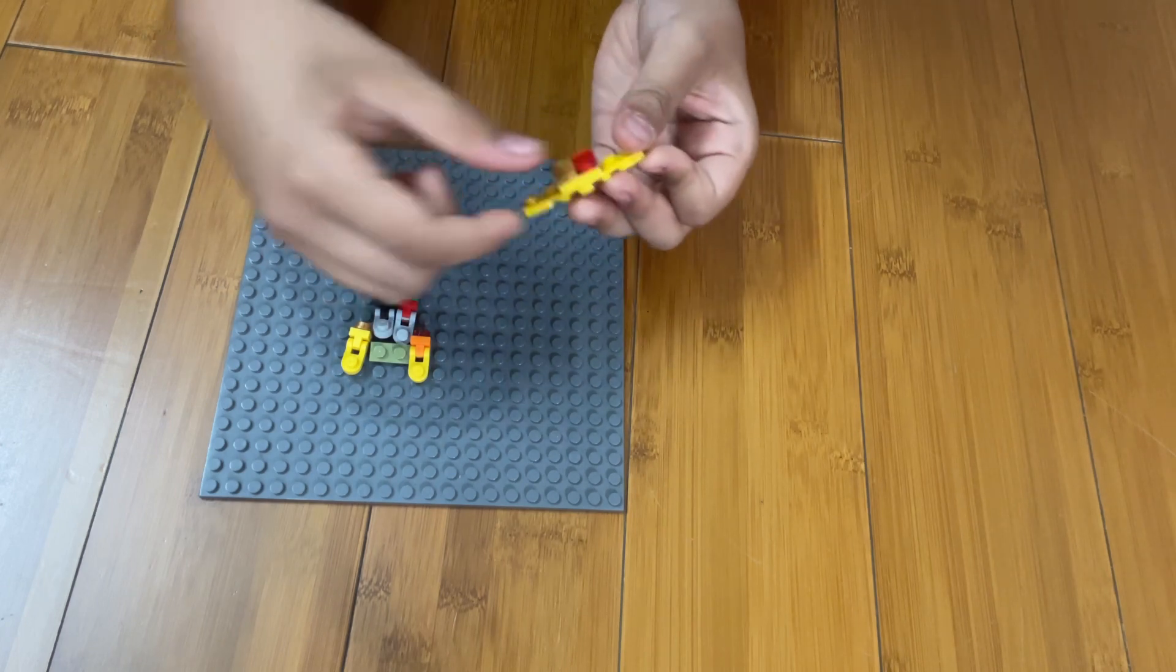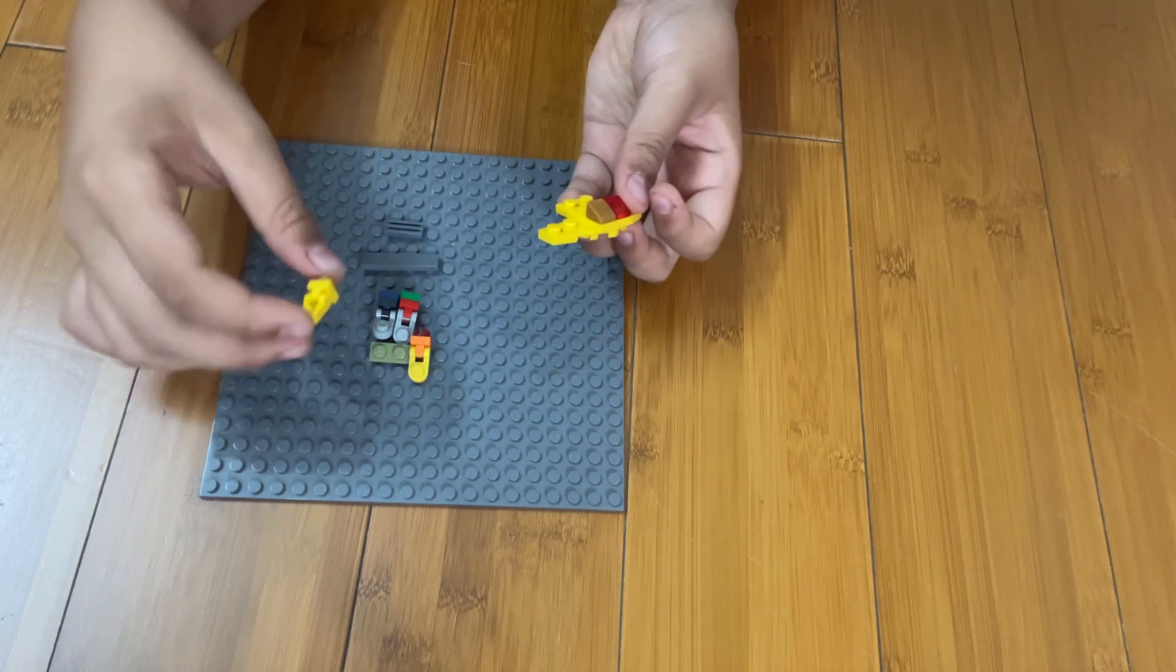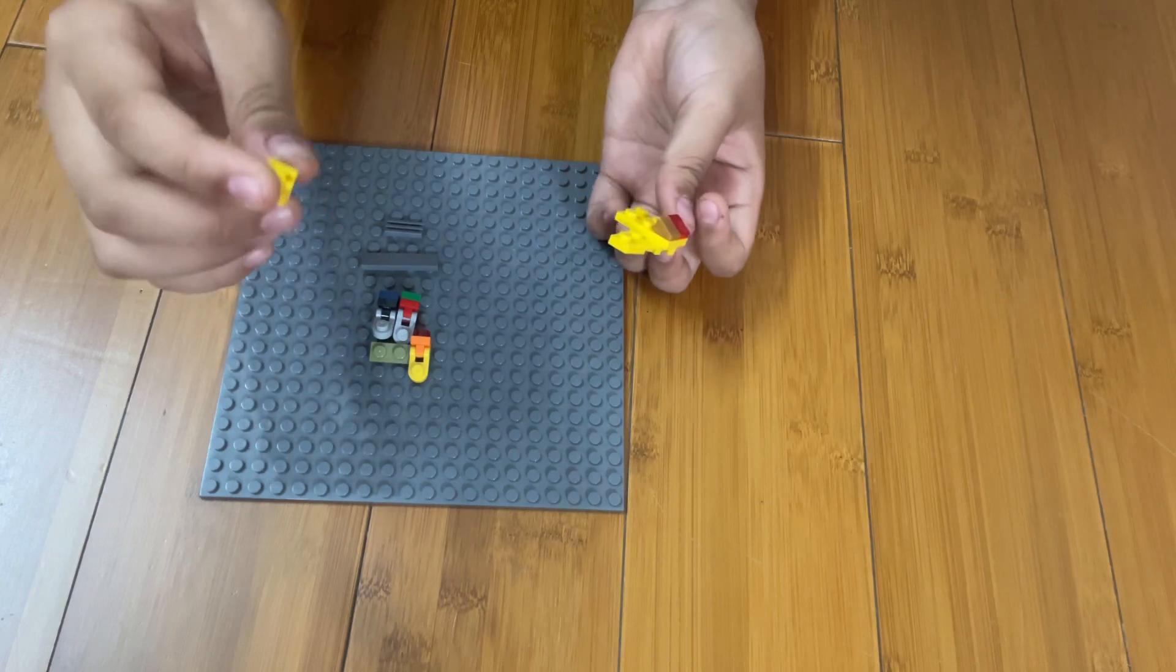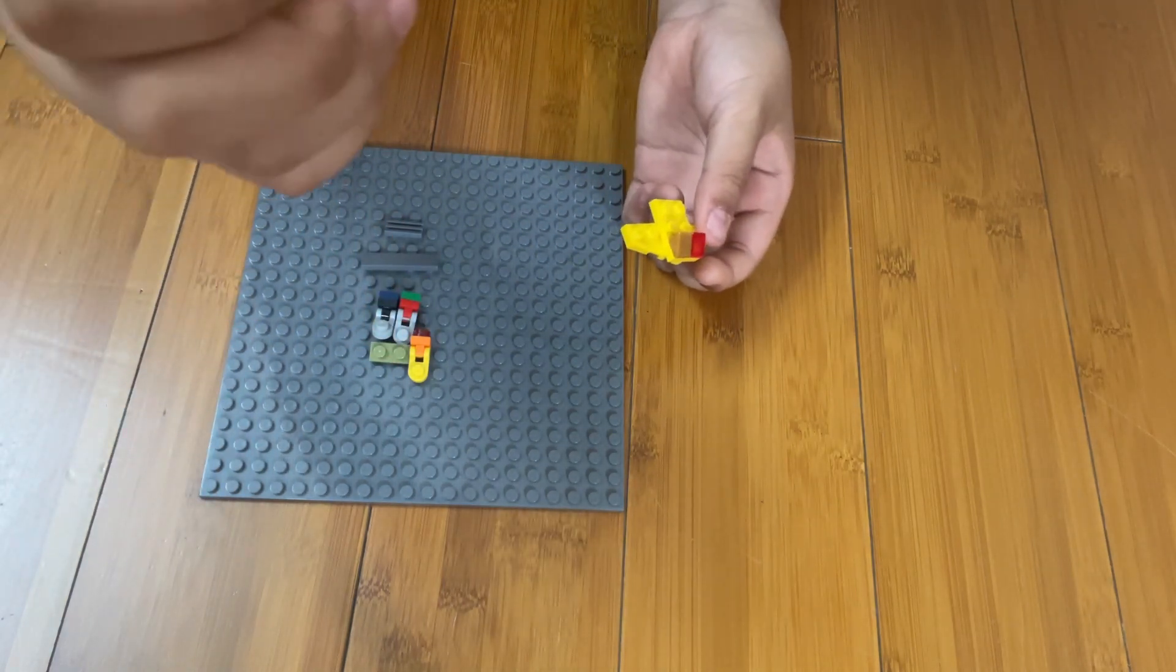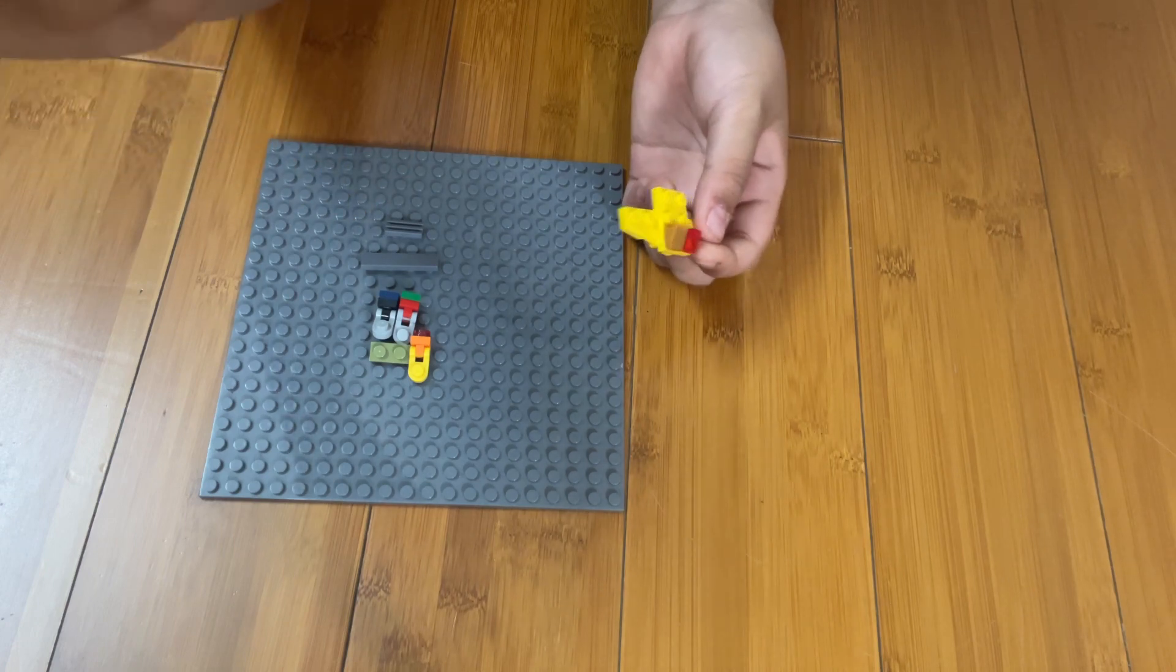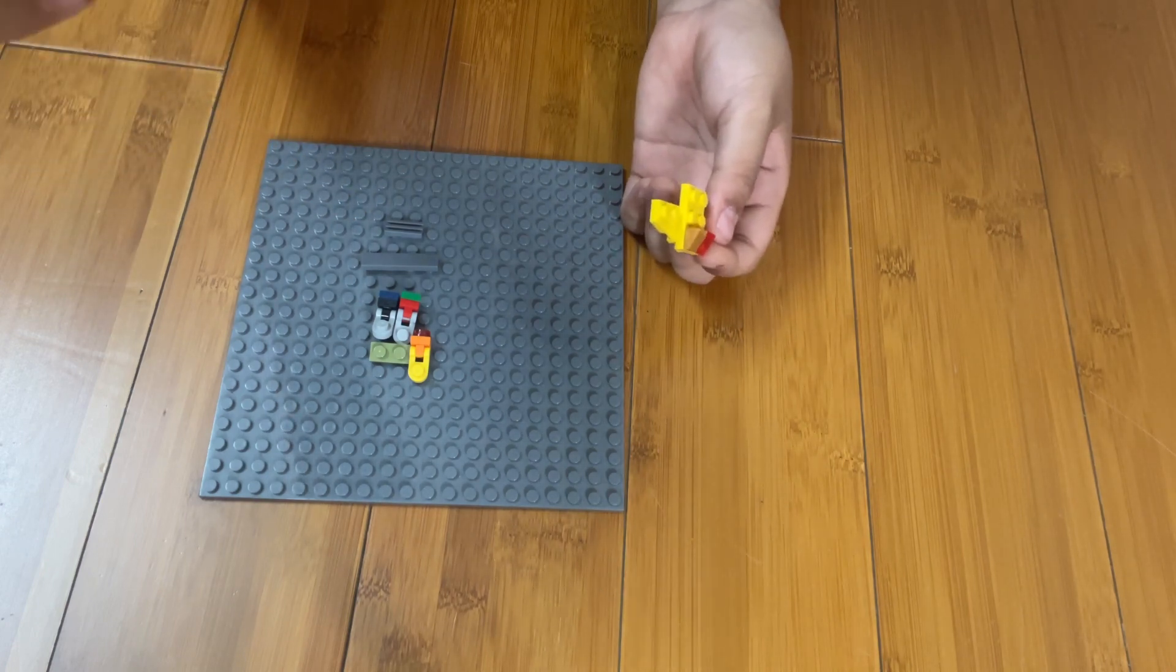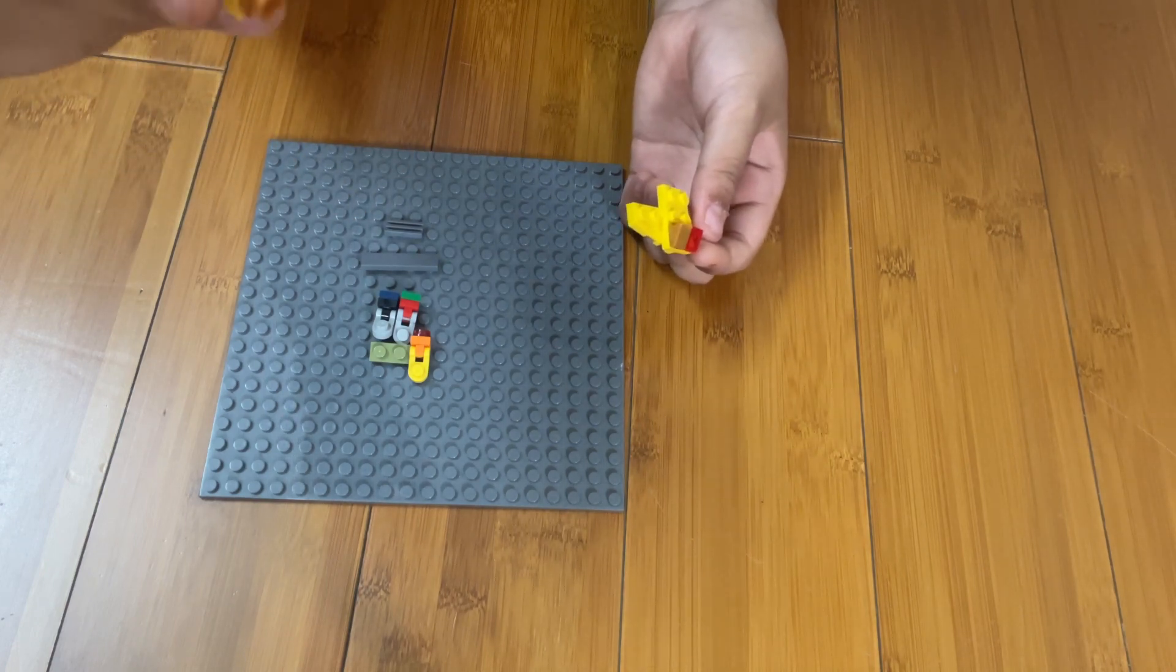Now you have the wings and the head. Now let's move on with the arms. For the arms, you need to get a circular 1x1 with a notch and a circular 1x1 with a rooftop piece on top.